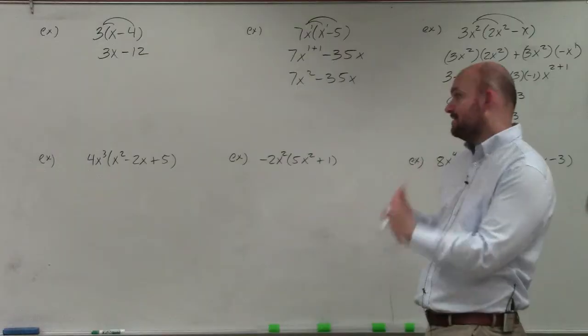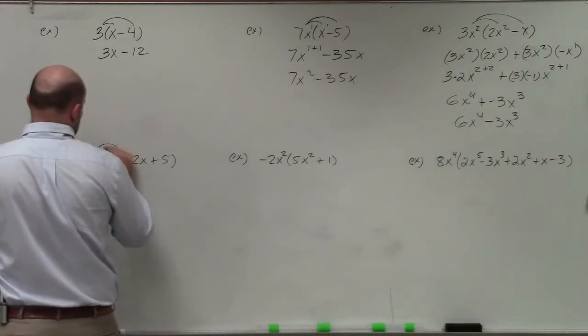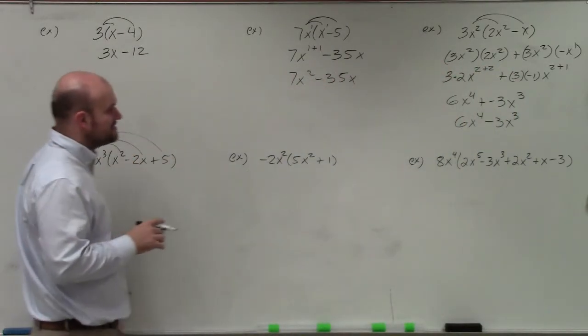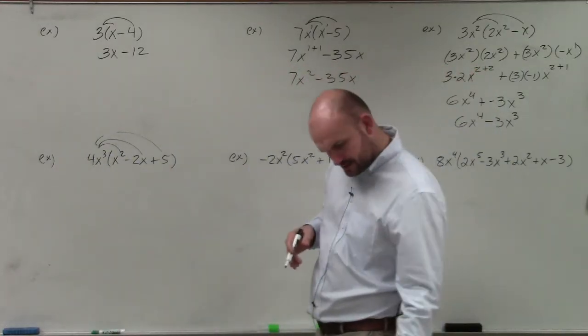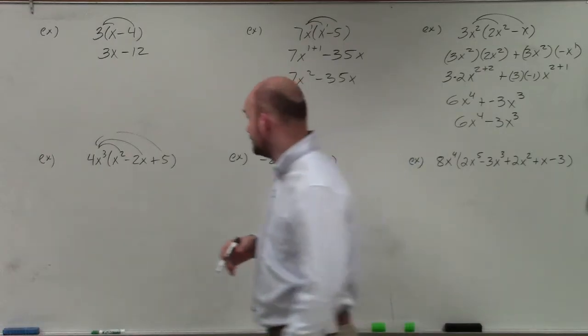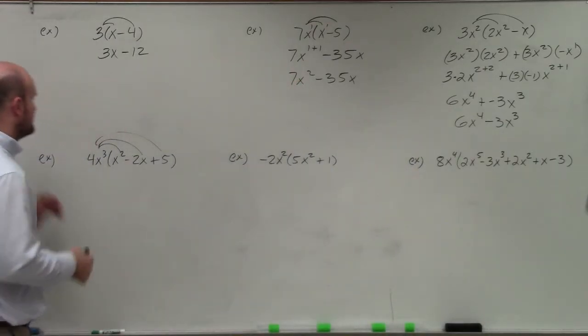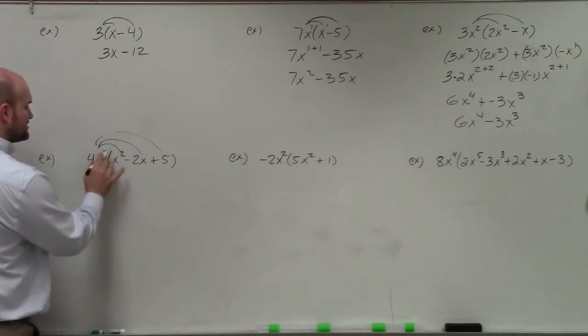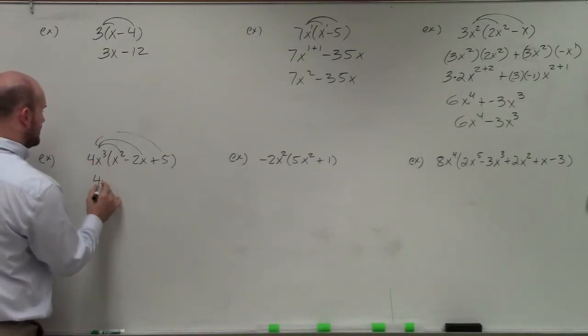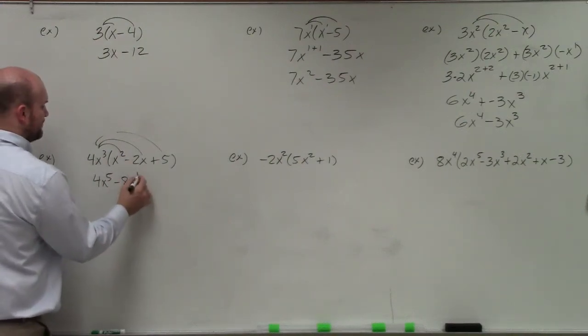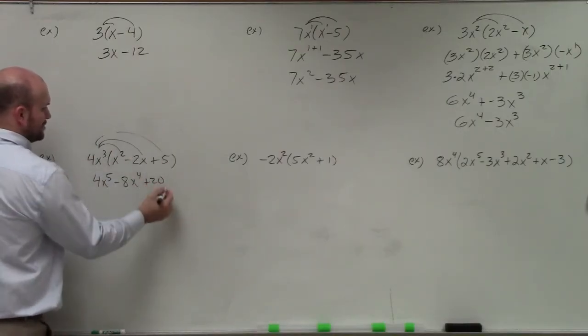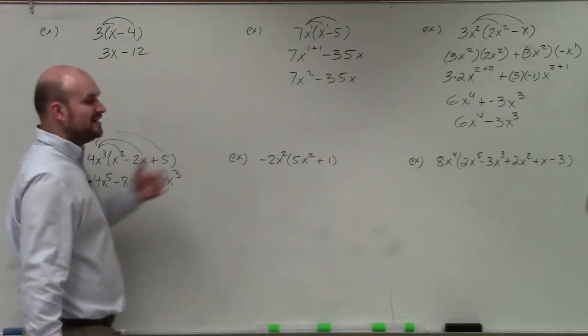All right, so again, kind of doing the same thing. Now you see we have three terms, but again, you're going to multiply that term on the outside to every single term over there on the inside. So therefore, now I'm just going to kind of do this. 4x cubed times x squared is going to be 4x to the fifth. 4x cubed times negative 2x, 4 times negative 2 is a negative 8, x cubed times x is x to the fourth. 4 times 5 is going to be plus 20, and then that's x cubed.